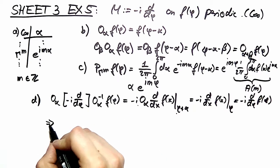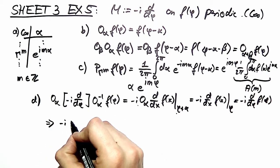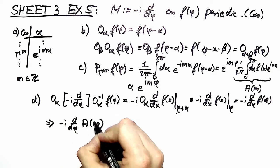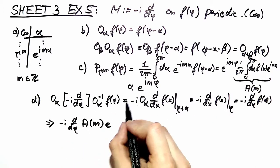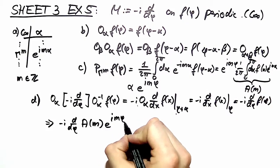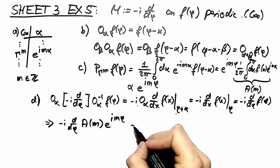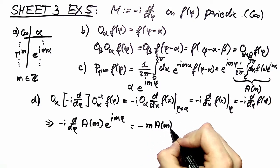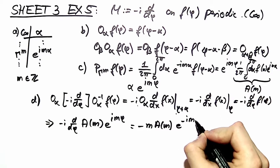Now we can write down the eigenvalue equation. We have minus i d by d phi a of m which is our constant right here times our basis function im phi. Now what happens? We derive by phi. This is a simple calculation. We end up with minus m a of m e to the minus im phi.